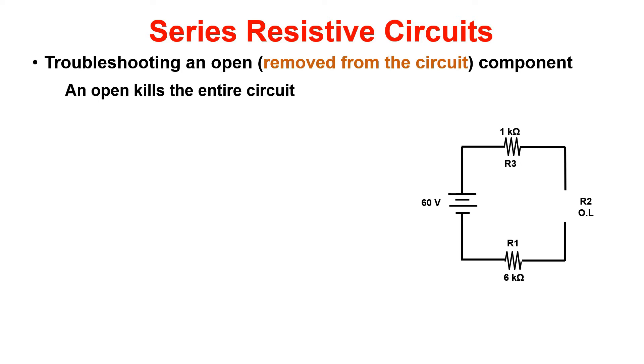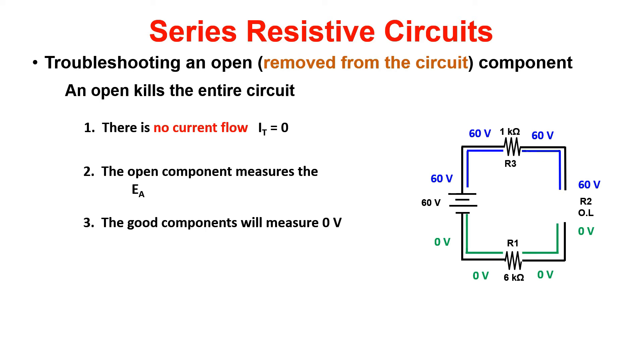The component that is open is going to measure applied voltage when measured using a multimeter. Good components will measure zero volts and the resistance of your circuit will measure infinite or OL.